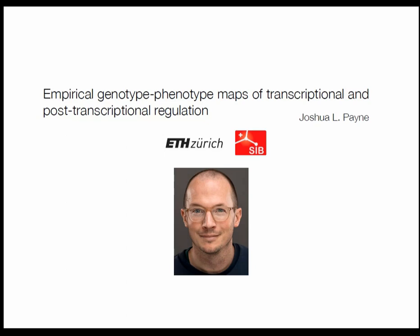Joshua did his undergrad in mathematics and computer science at Regis University in Denver, Colorado, his master's in operational research at the Rensselaer Polytechnic Institute in Troy, New York, and obtained his PhD in computer science in 2009 at the University of Vermont. From 2009 to 2011 he was a postdoctoral researcher in the computational genetics laboratory at Dartmouth College, then from 2012 to 2015 at the Department of Evolutionary Biology and Environmental Studies at the University of Zurich, where he continued as a junior group leader funded by an SNF Ambizione. Since 2017, he is an SNF assistant professor at ETH Zurich, and since 2019 also a group leader at the Swiss Institute of Bioinformatics.